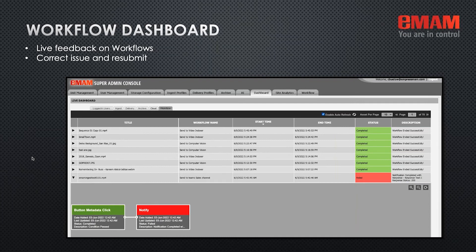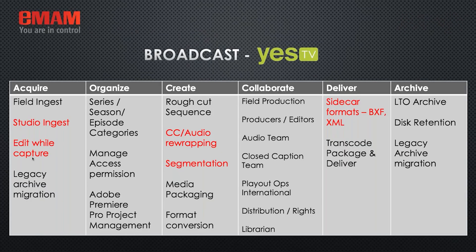When workflows are running, you'll always want a dashboard to view live feedback — whether a workflow completed, at what time, the workflow name, the filename, and the status. If there's a problem, the dashboard shows a red indicator for that asset. You can go back, check the system, investigate if a server or transcoder is down, and resubmit the job to have it complete.